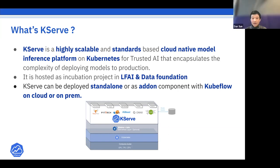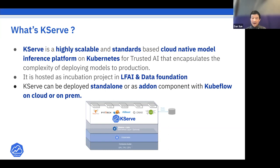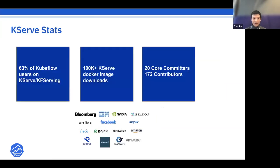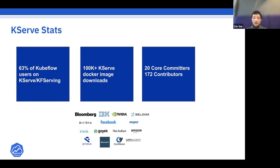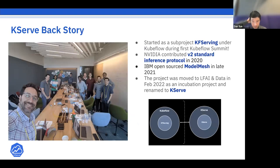KServe was originally named KF Serving as a KFlow serving component. Currently, about 70% of KFlow users actively use KServe or its predecessor KF Serving. There are about 100K image downloads daily. The project has 20 core contributors and over 100 contributors from various regions and countries, with a wide list of active adopters.